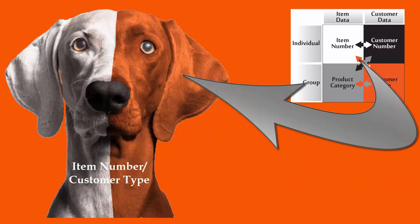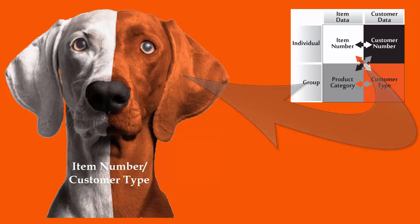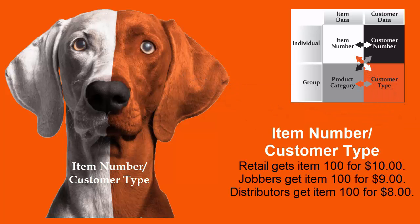Or you could have the combination of Item Number and Customer Type. This means that retail gets Item Number 100 for $10, while jobbers get Item Number 100 for $9, and distributors can buy Item Number 100 for $8.